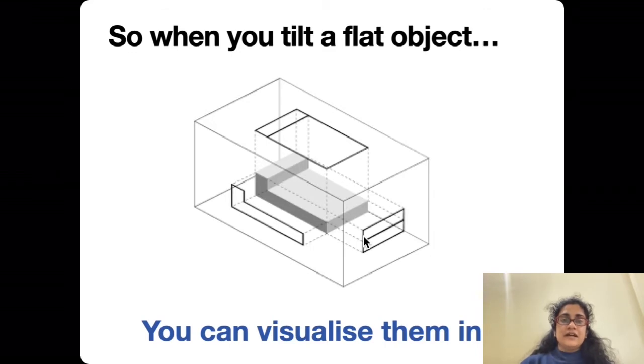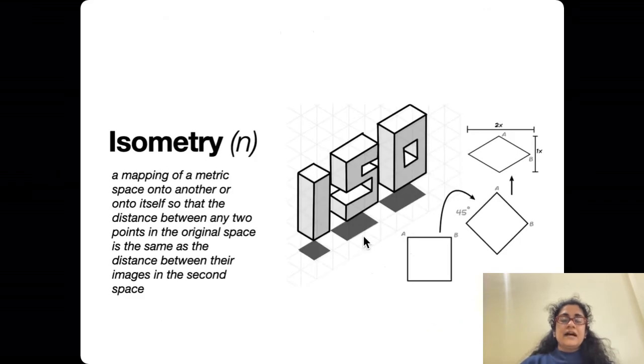Isometric drawing simply means you map one metric space into another so that the distance between them is accurate, which means the front of the object, the lines that are at the very forefront, are the same size as the lines that basically occupy the back. If you were to make a transparent move of these letters - the I, the S, and the O - you will see transparent dotting at the back.